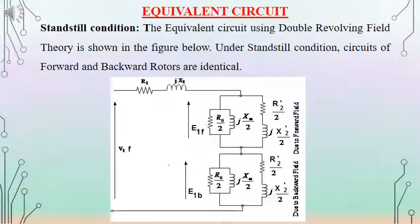Recalling the equivalent circuit of three-phase induction motor: when referring rotor resistance to the stator side, we have R2'/s. For the forward rotating rotor we use R2'/s, and for the backward rotating rotor we use R2'/(2-s). But when s = 1, both quantities equal R2' itself. The resistance is taken as R2'/2 because we have considered two separate rotors each with parameters R2'.